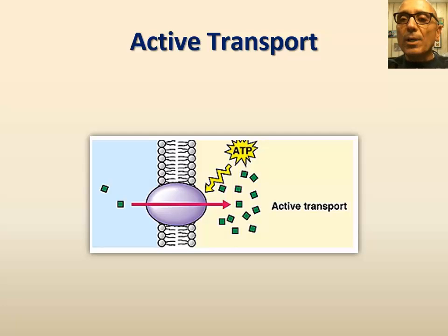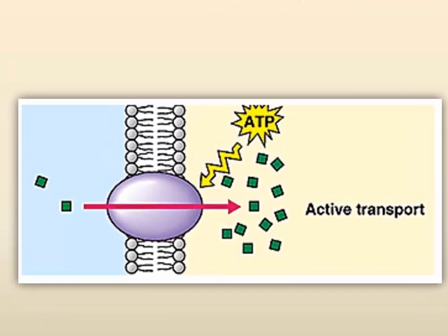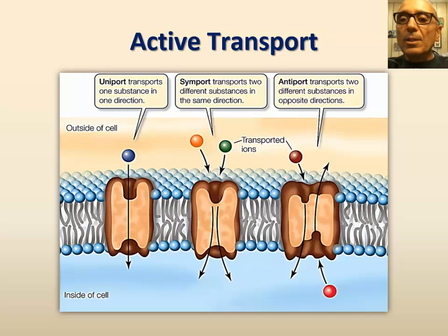Let's look now at active transport. As mentioned earlier, active transport involves membrane proteins that use metabolic energy in the form of ATP to move solutes uphill against their concentration gradient — in other words, moving particles from areas of low concentration to areas of high concentration. Active transport is directional, involving three types of active transport protein systems.